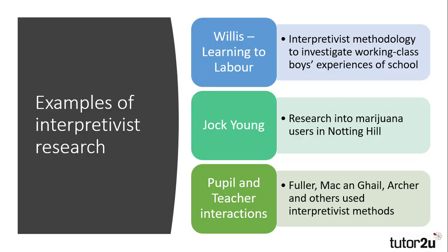Some examples of interpretivist research from across the specification are Willis's Learning to Labour, which utilised a range of interpretivist methods to investigate the experience of education that working-class boys had. Jock Young's research into deviancy amplification looked at the process of labelling and cracking down on marijuana users in Notting Hill, leading to further deviance. And a range of sociologists have utilised interpretivist methodologies in education — Fuller, Archer, Mack and Guile, to name but a few — examining the impacts of education on different social groups.